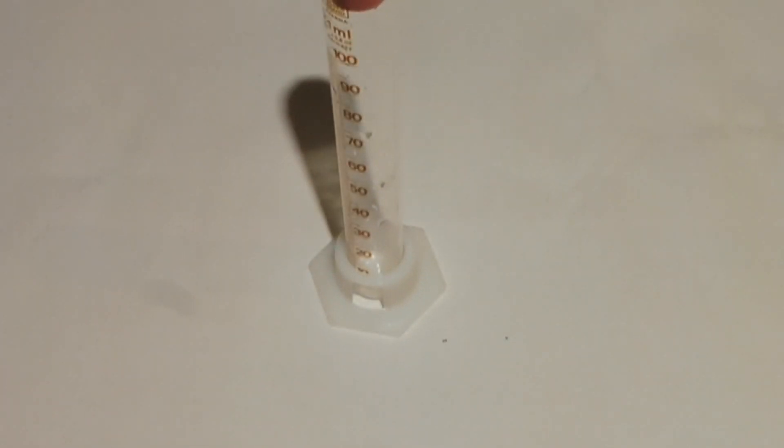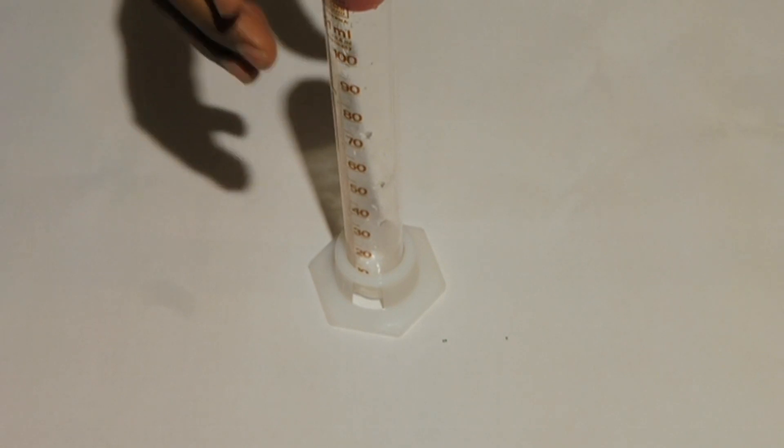Take the measuring cylinder, also known as a graduated cylinder. Remove the base so that the cylinder lies flat on the bench.